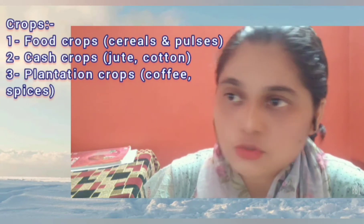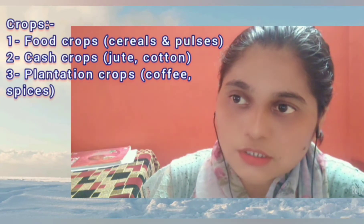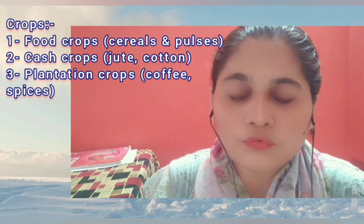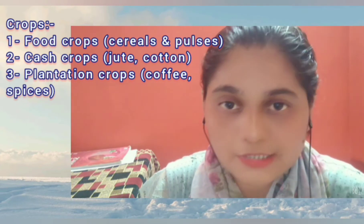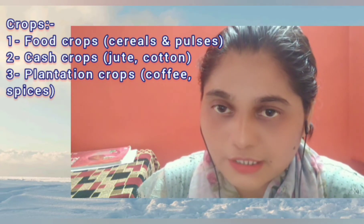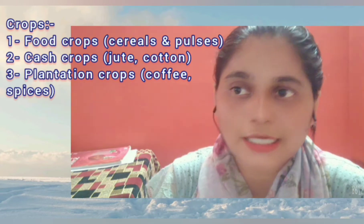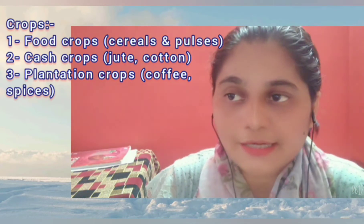Now we discuss growing crops. Plants grown on large scales are called crops. Those grown for production of food are called food crops — for example cereals, pulses, oilseeds, and sugar crops. Those grown for commercial purpose are called cash crops — for example jute, cotton, and rubber.